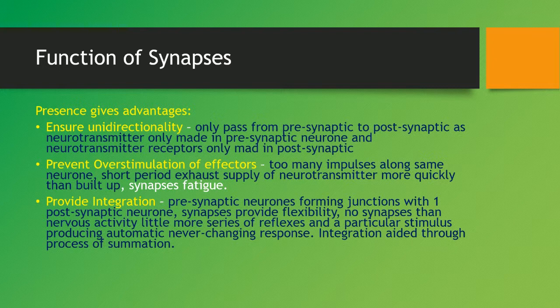Once all the neurotransmitter is used up, the effector won't be stimulated anymore, preventing its overstimulation. Synapses also provide integration as pre-synaptic neurons form junctions with one post-synaptic neuron. They provide flexibility — without synapses, nervous activity would be little more than a series of reflexes, where a particular stimulus produces an automatic never-changing response. Integration is needed for the process of summation.